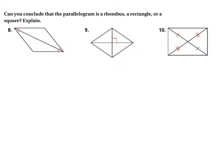Alright, because this particular lesson is asking you to use what you know to prove whether something is a certain type of figure, they are asking us in numbers 8, 9, and 10 to see if we can conclude that these parallelograms are either rhombuses, rectangles, or squares, and then explain why.